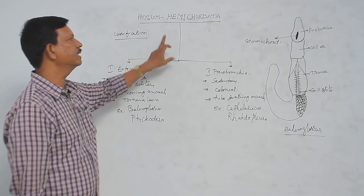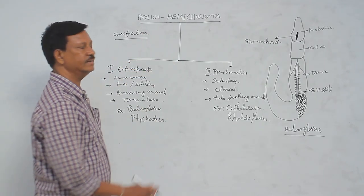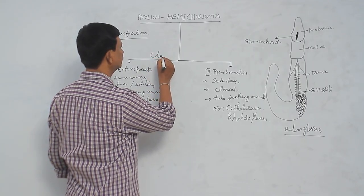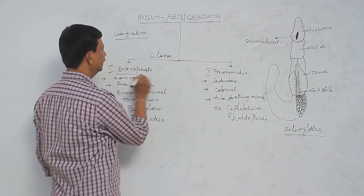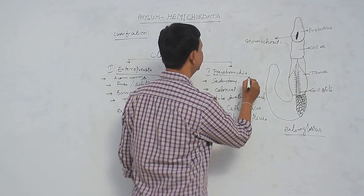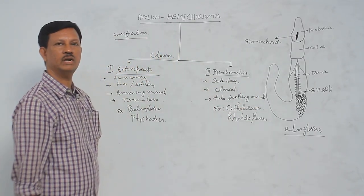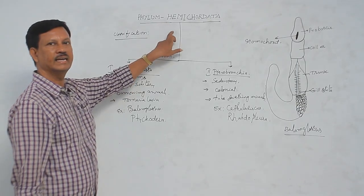It's the classification of the Hemichordata. Hemichordata is divided into two classes. They are Enteroneusta and Tyrobranchia. These are the two classes included in the phylum Hemichordata.